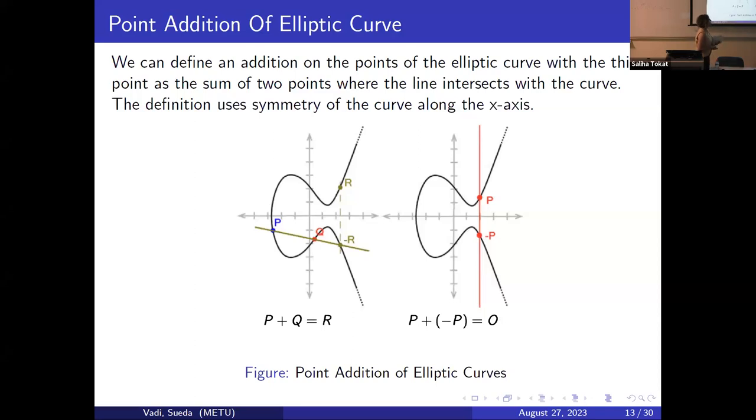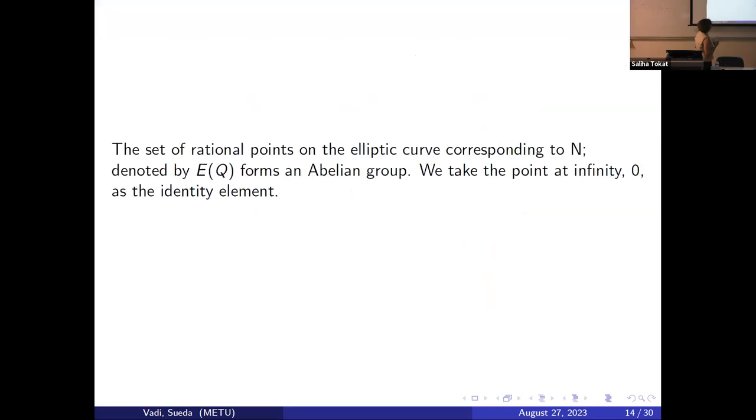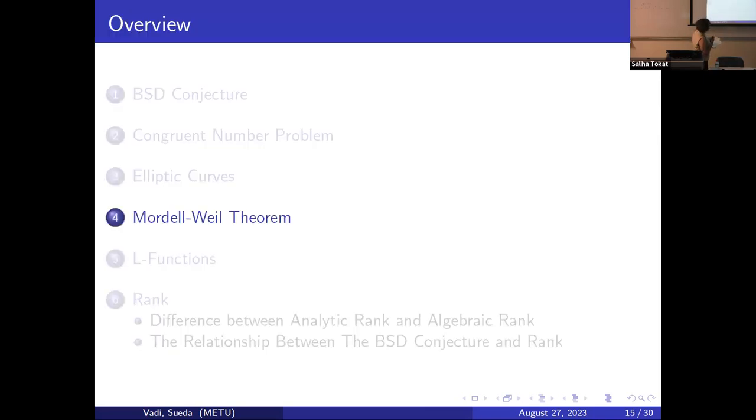How can I add them? Let's say P and Q. We add them, and by the lemma, the line crosses a third point, let's say R. We say that P plus Q equals R reflected over the x-axis. This is the point addition operation. We take the point at infinity as zero, the identity element. Now we can go to the next station, which is the Mordell-Weil theorem.